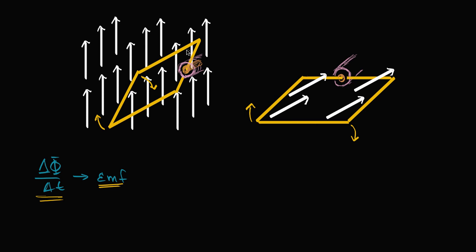So I have this loop here. It's connected to this axle, and I'm going to rotate it in a clockwise direction through this constant magnetic field. The magnetic field vectors are all pointing straight up, and I've drawn them so they all have the same magnitude. As we rotate this, the angle between the magnetic field and the surface is changing.